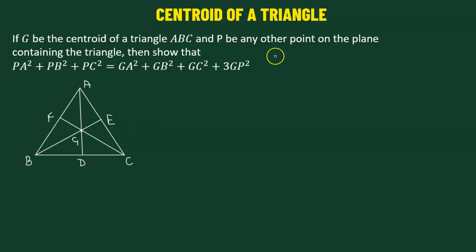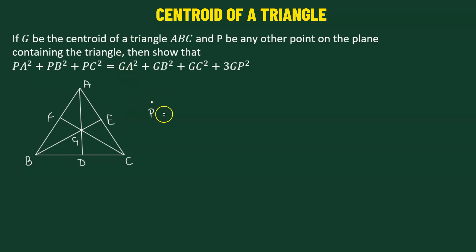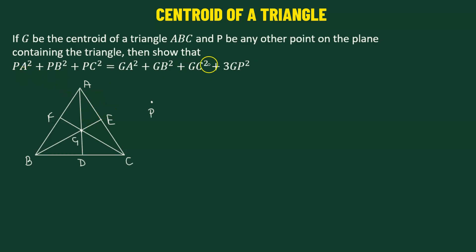It's also given that we have another point P on the plane containing the triangle. We're going to assume that point P lies outside the triangle, as this will help us perform the calculation easily. We can also consider the point to be lying inside. Then we need to show that the following expression is true.